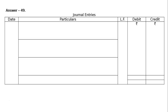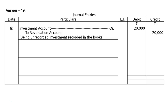First entry: Unrecorded investment worth Rs 20,000. This is an increase in asset, so it is credited to the revaluation account. Investment account is debited and revaluation account is credited — Rs 20,000 each. Being unrecorded investment recorded in the books.